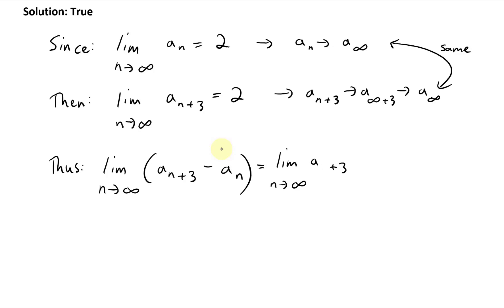write this one more time neater, a_{n+3} minus the limit as n approaches infinity of a_n, and these both equal to 2, so 2 minus 2 equals 0. And just move it over here and check mark.